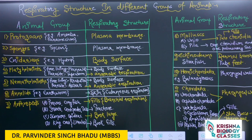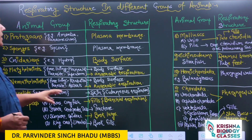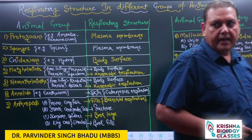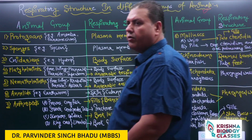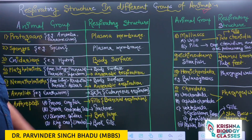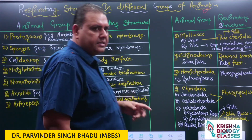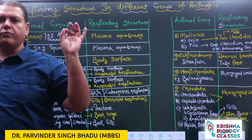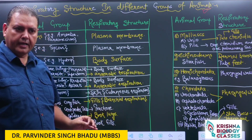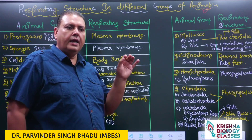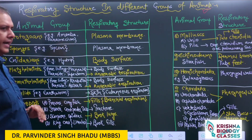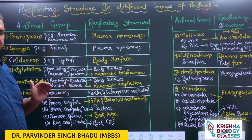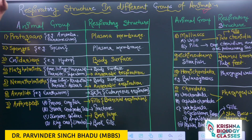The most typical type of question from this chapter is related to respiratory structures in different groups of animals — on average, two to three questions come from this topic. The first type involves aerobic vs. anaerobic respiration; the second is the difference between breathing and respiration; the third is about respiratory surface and medium; and the fourth requires knowing the respiratory structures of different animal groups.